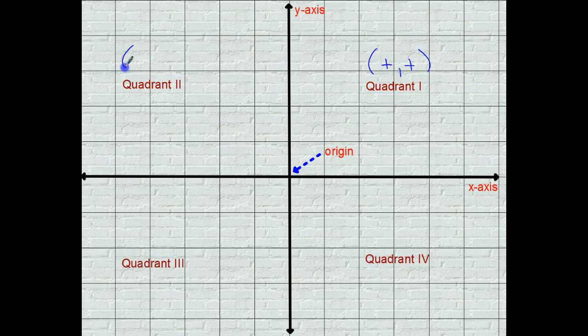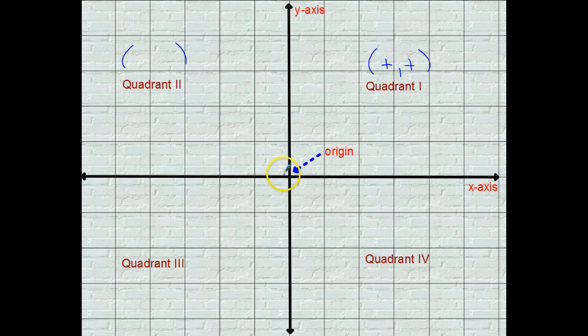As you move over to quadrant two, your x-coordinates become negative, but your y-coordinates are still going up from zero, so we call these positive.